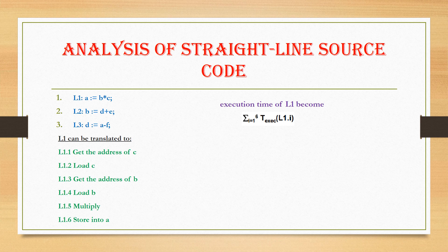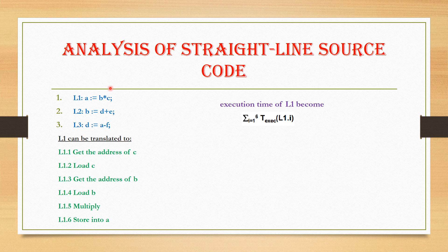Next, we are going to see the analysis of straight-line source code. Here we are considering a three-line source code: line 1 is A = B × C, line 2 is B = D + E, and line 3 is D = A − F. In this example, we are going to calculate the execution time for line 1 alone. For line 1, there are three variables: A, B, and C. In order to execute line 1, we need six steps: first, get the address of C; then load the value of C; next, get the address of B; load the value of B; then multiply B and C; and store the result in A.